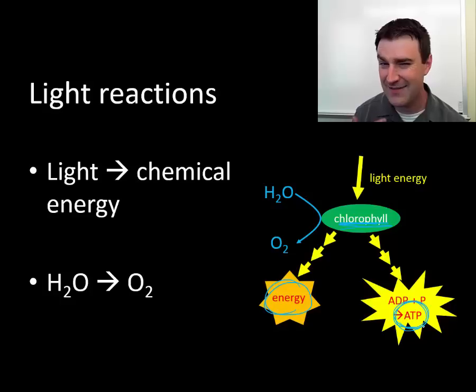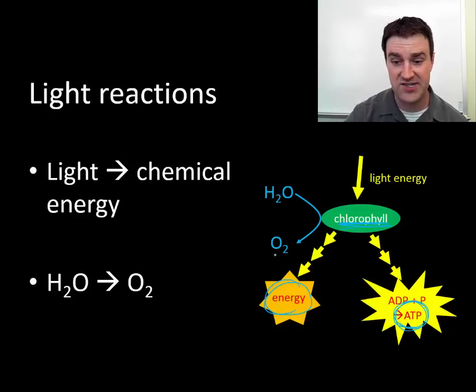But this ATP is not available to the rest of the cell. We're going to see that it immediately gets spent to help build the sugar that we're trying to eventually make. Also just briefly point out that water is needed in this step. Water actually delivers something to the chlorophyll to help it out. And once it delivers that, it becomes oxygen gas. So that's the light reactions.